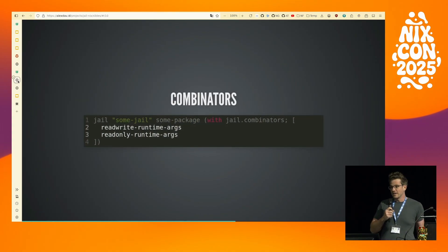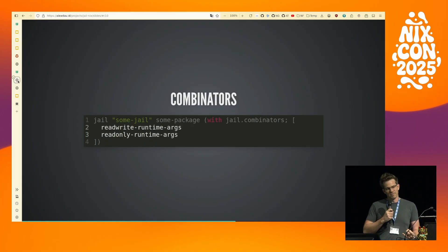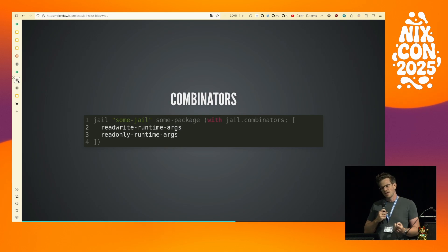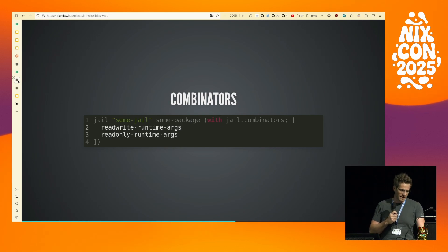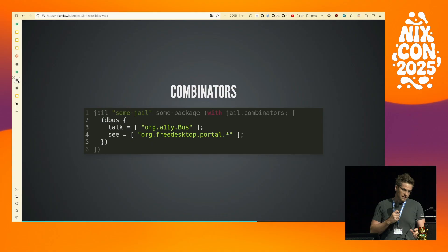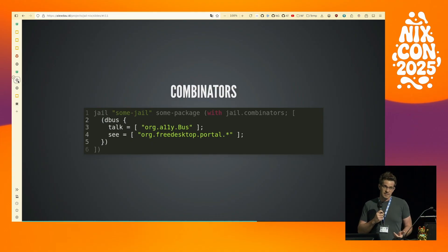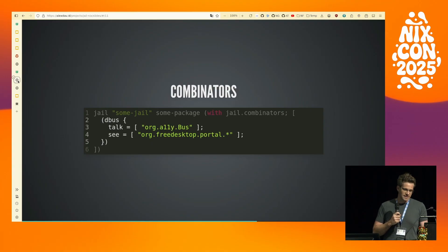There are some combinators that give you access to any argv paths that are valid file paths — this is useful if you have an editor, a PDF reader, a media player, or something like that. There's also a dbus combinator that uses xdg-dbus-proxy under the hood to give you a sandboxed dbus socket in case your software needs that.